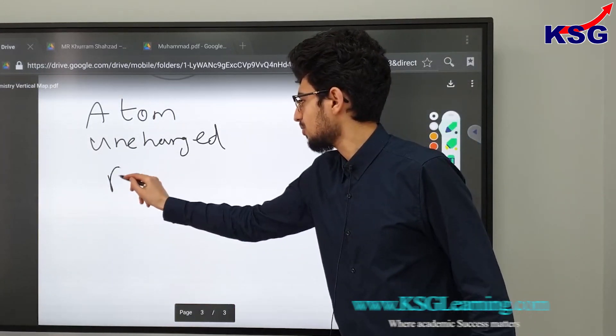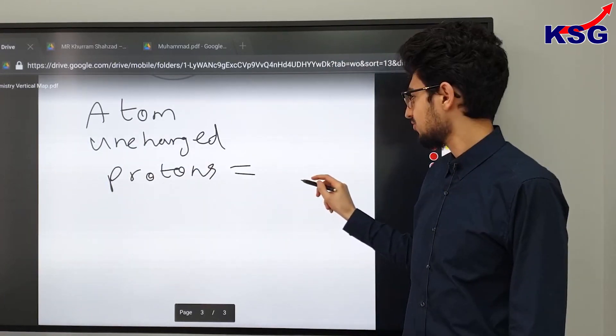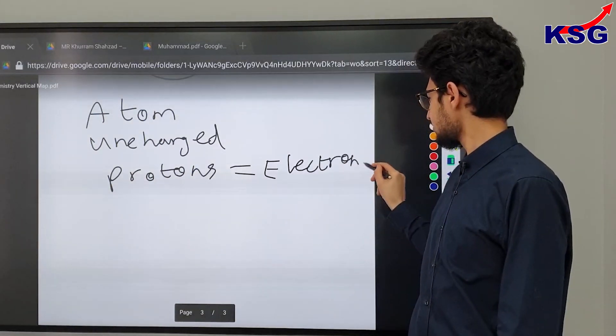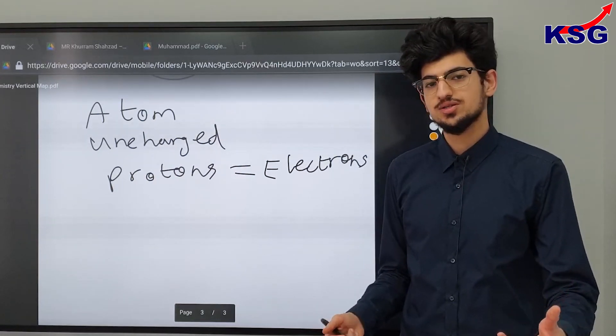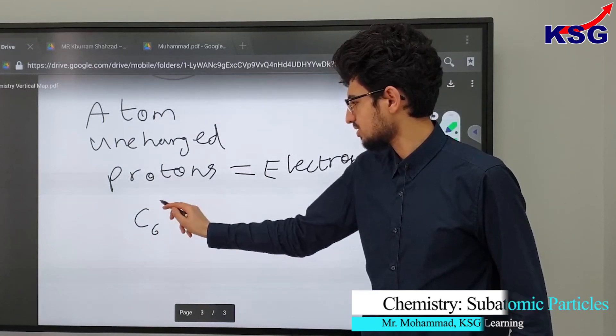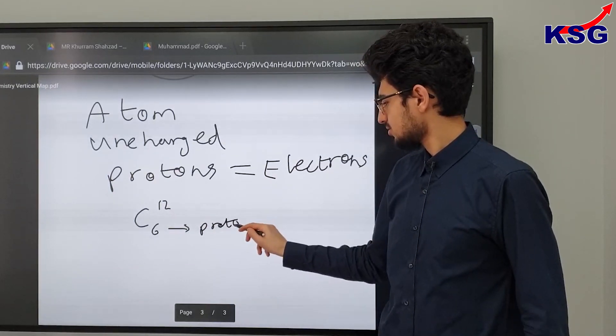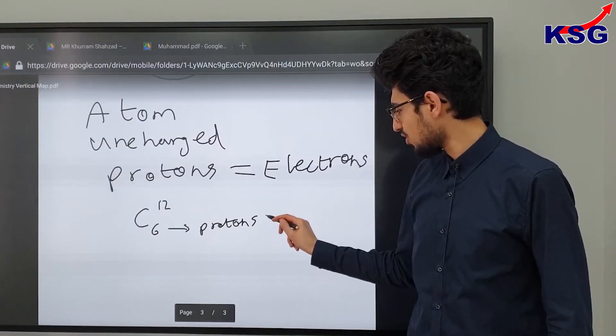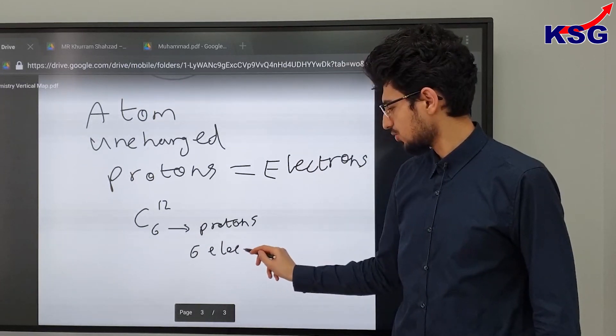And therefore, the number of protons needs to be equal to the number of electrons. Since on the periodic table, we can see the number of protons below the atom, such as for example, if we have carbon, it's going to say six on the bottom, 12 on the top, where six represents the number of protons, then as a result, we can tell that the number of electrons must also be equal to six, as they have to equal each other.